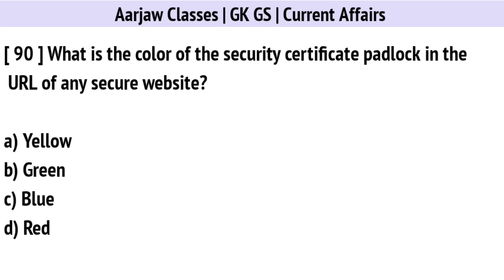What is the color of the security certificate padlock in the URL of any secure website? The correct option is B: Green.